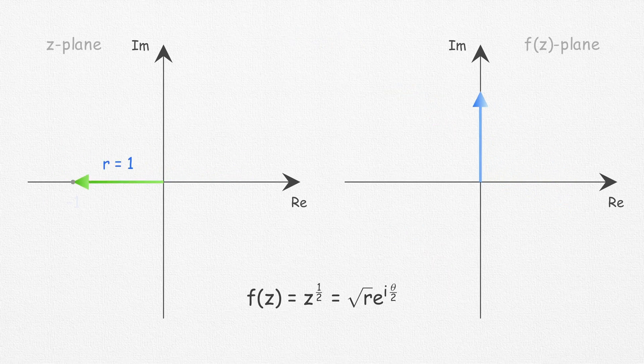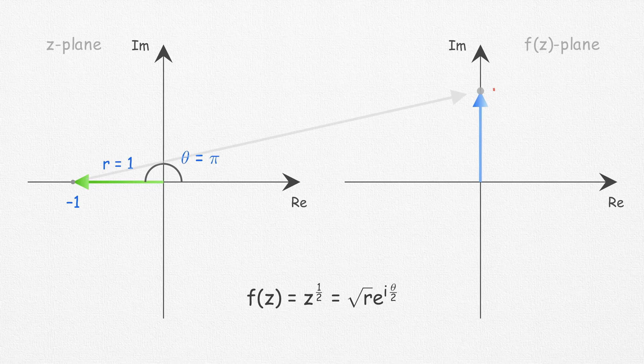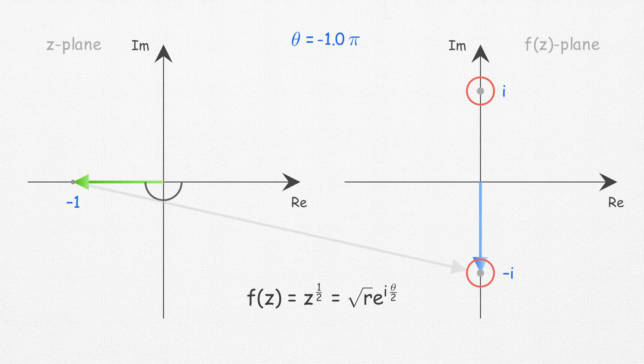Again, taking the case of z to the power 1 by 2, that is square root of z, the point minus 1 in the z-plane maps to two points i and minus i in the f(z)-plane. This actually means root over minus 1 has two values, i and minus i. Weird, right?